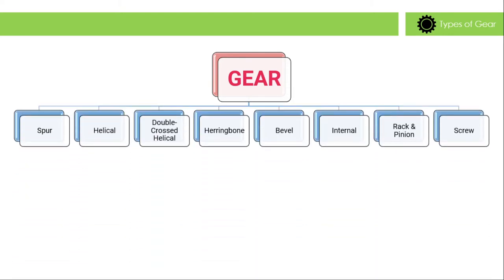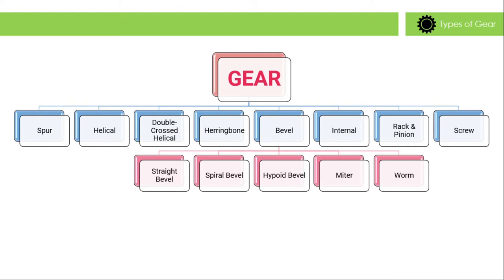There are various types of gear. They are: spur gear, helical gear, double crossed helical gear, herringbone gear, bevel gear, internal gear, rack and pinion gear, and screw gear. Bevel gears are of the following types: straight bevel gear, spiral bevel gear, hypoid bevel gear, miter gear, and arm gear.